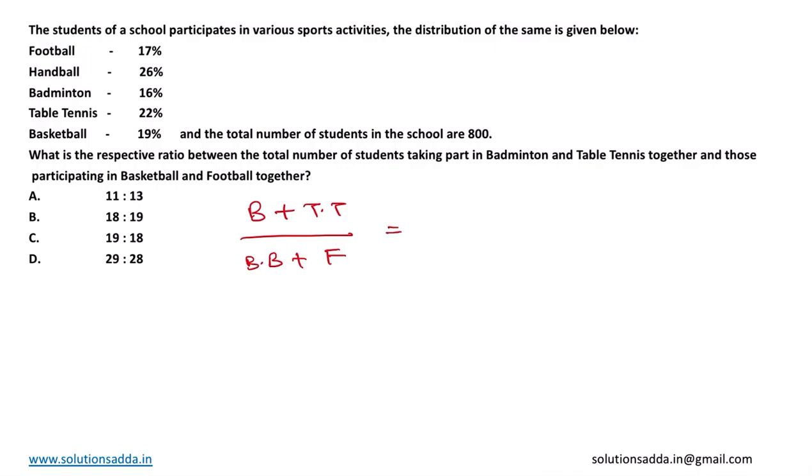So number of students in badminton is 16%, therefore 16 by 100 times 800, plus table tennis which is 22%, so 22 by 100 times 800. Basketball is 19%, so 19 by 100 times 800, plus football which is 17%, so 17 by 100 times 800.